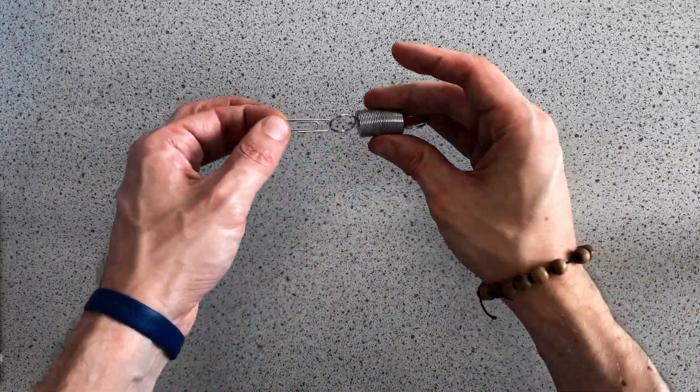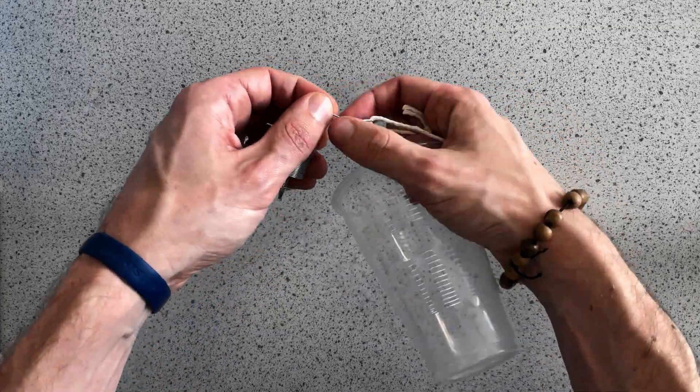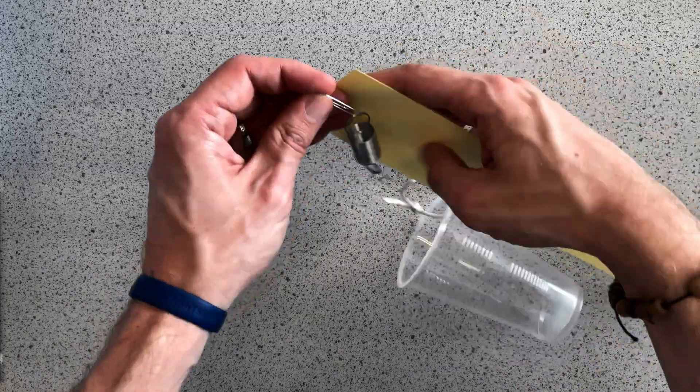Begin by attaching your paper clips to your spring. Then on one paper clip attach your cup and on the other one your piece of card.